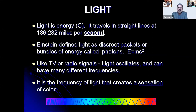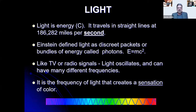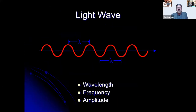Light is energy traveling in straight lines at 186,282 miles per second. Einstein defined light as discrete packets of energy called photons. Like TV or radio signals, light oscillates and can have many different frequencies — it is the frequency of light that creates the sensation of color. All this is taken into consideration even with electronic shading systems available today. A light wave has wavelength, frequency, and amplitude.